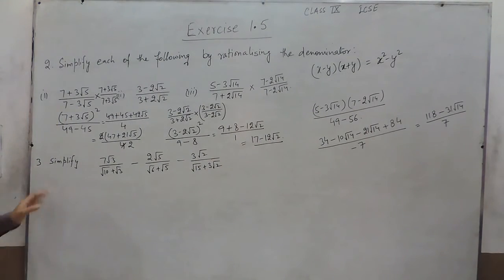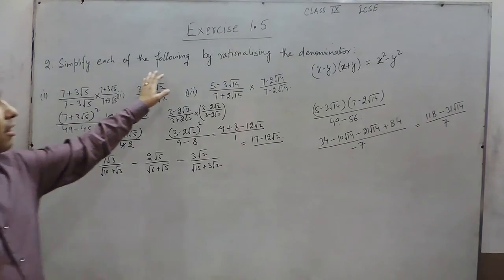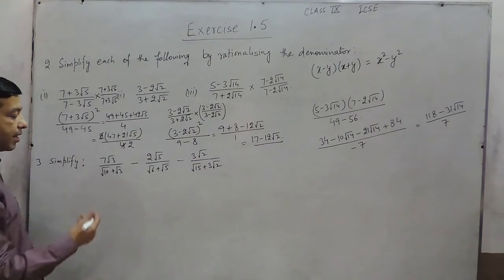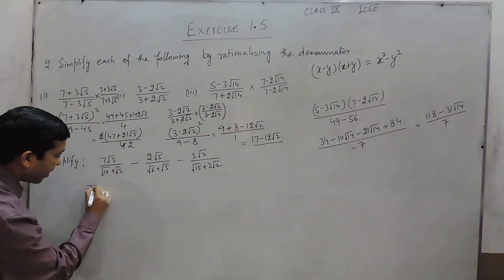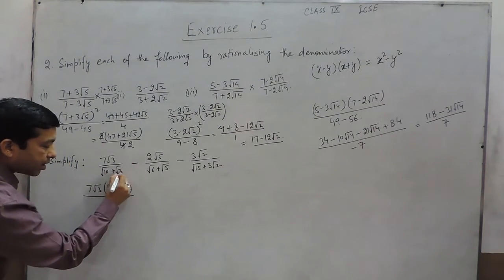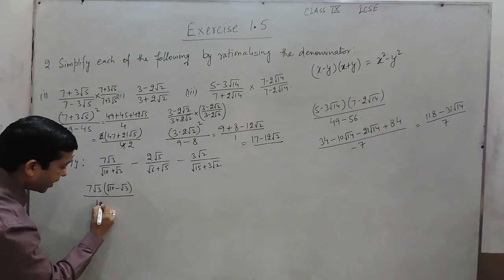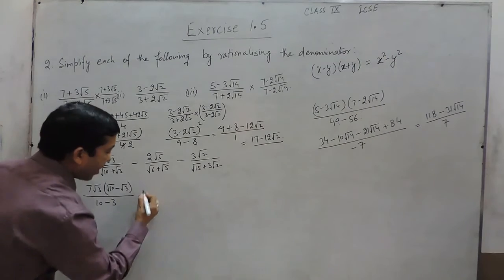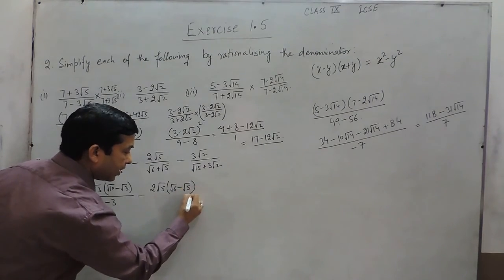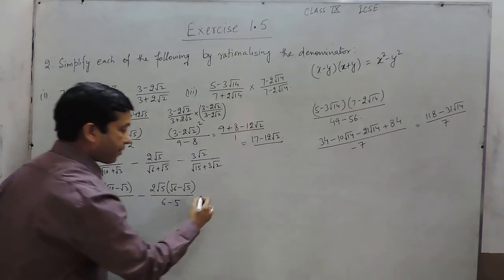Looking at question number 3, where we have to simplify: I already told you that when I say simplify, it means we rationalize the denominator. So for the first sub-part, we multiply by (root 10 minus root 3) upon (root 10 minus root 3). Applying x squared minus y squared, the denominator becomes 10 minus 3, which is 7. For the next sub-part, 2 root 5 is multiplied by (root 6 minus root 5), which is the conjugate of (root 6 plus root 5), giving denominator 6 minus 5.